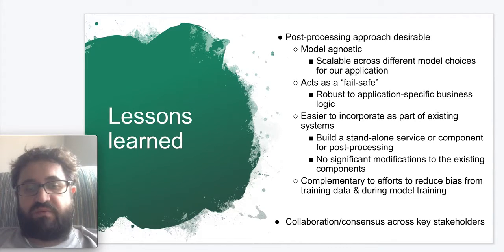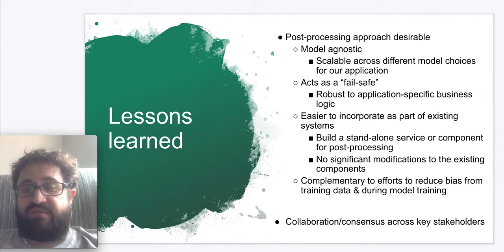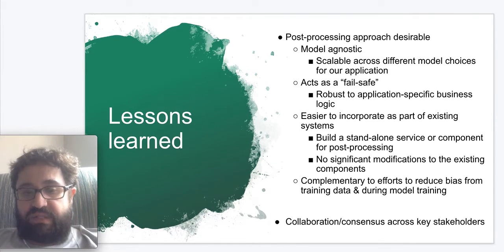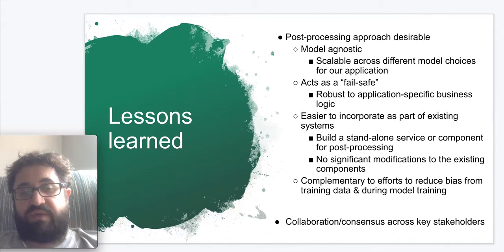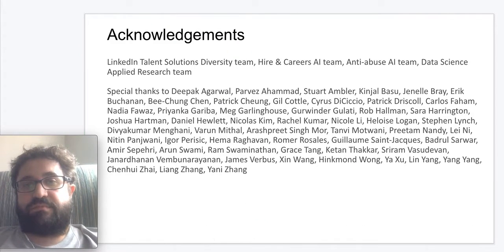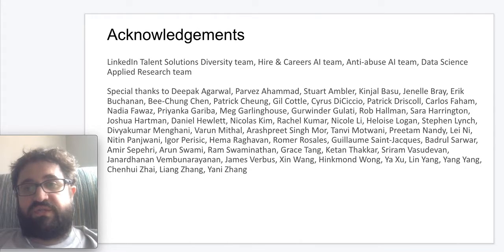However, we remark that efforts to eliminate and reduce bias from training data or during model training can still be explored, and such efforts should be thought of as complementary to our approach — with our approach acting as a fail-safe last step. Building consensus and achieving collaboration across key stakeholders such as product, legal, PR, engineering, and AI teams is a prerequisite for successful adoption of fairness-aware approaches in practice.